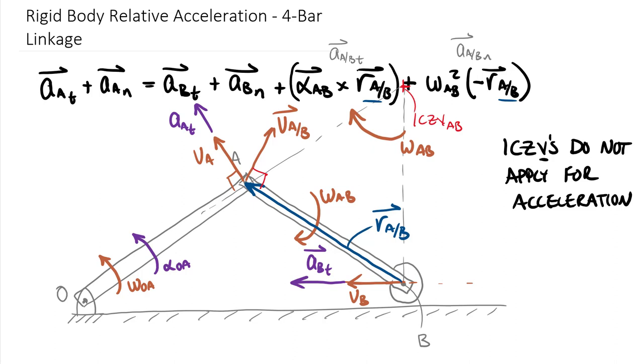So ICZVs, once again, that's the instantaneous center of zero velocity. There is no instantaneous center of zero acceleration. They do not apply for acceleration. We can use the velocities that come from that technique. But we cannot apply a similar mindset for accelerations. But one nice thing is, is that if we have these one degree of freedom systems, if we have our omega and our alpha going in the same direction on one body, it turns out that our omega and our alpha are going in the same direction on the other bodies as well.